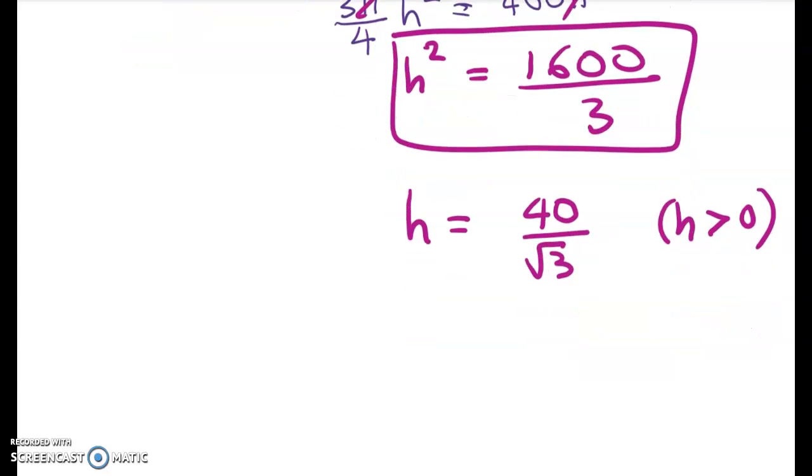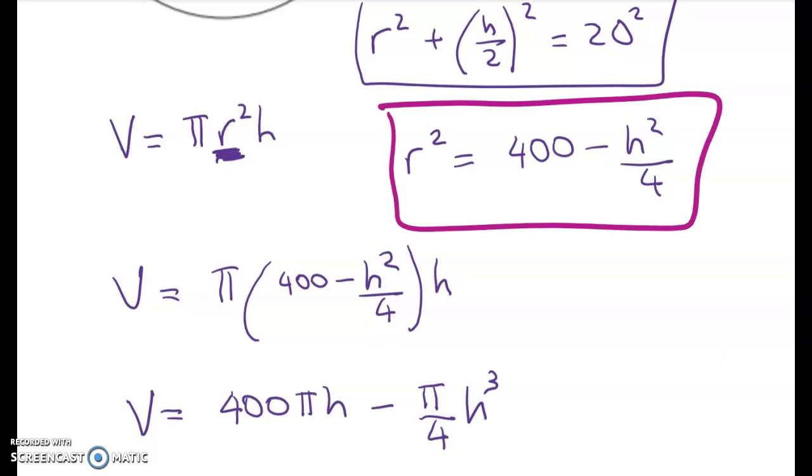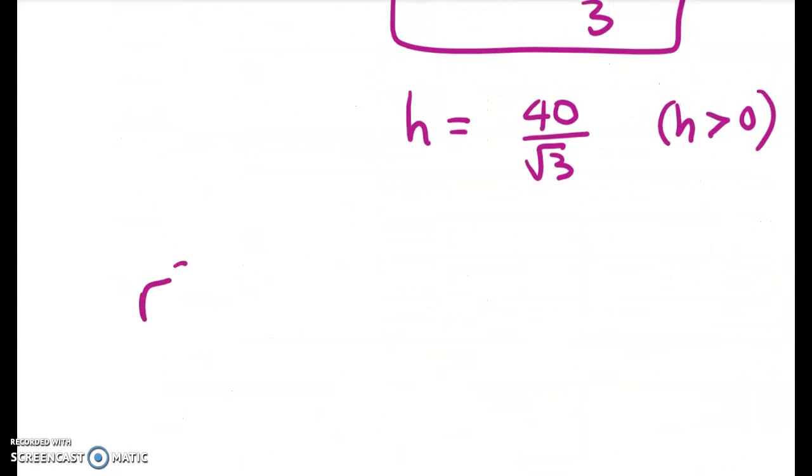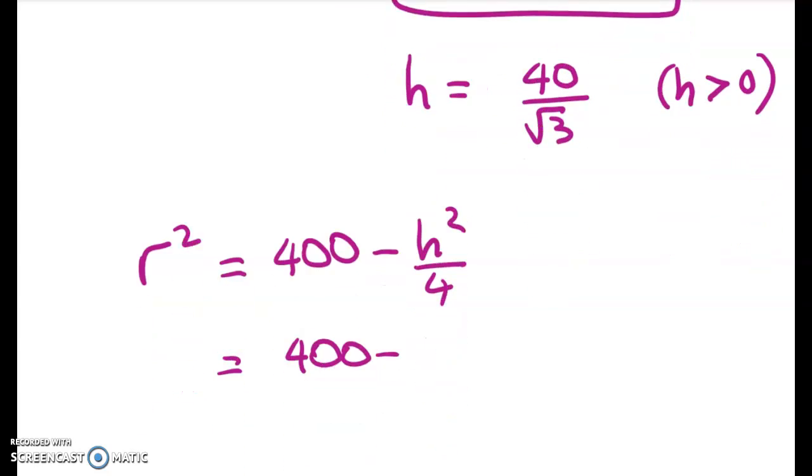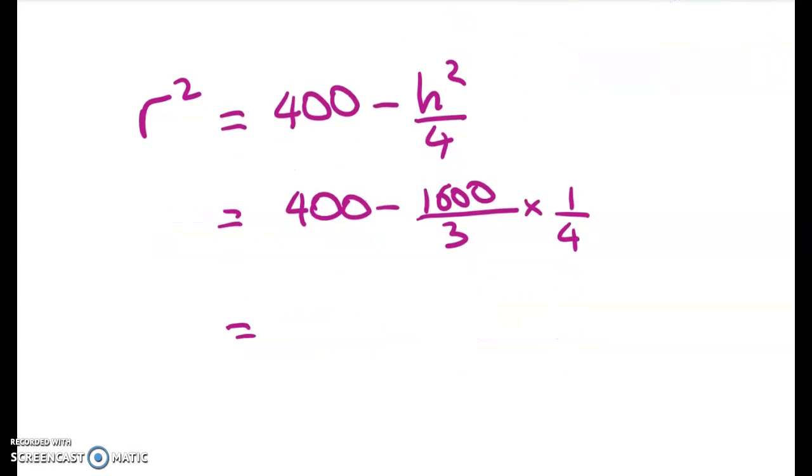Right, what's left? Well, from above we had our expression that linked R squared and H squared. So we're going to substitute my value of H squared in here. So R squared is equal to 400 minus H squared on 4, which is 400 take away 1600 divided by 3 times 1 quarter, which gives me 400 minus 400 over 3.